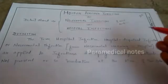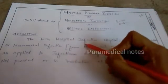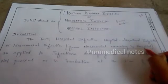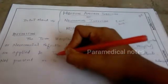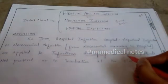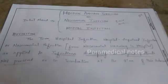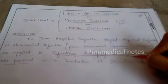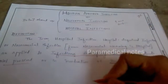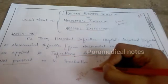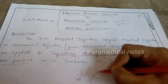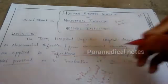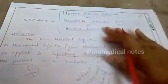So if they ask in an exam about nosocomial infection, we should write first the definition. In very simple words and a very simple sentence, we should write and underline the important points and words. The term hospital infection, hospital acute infection, or nosocomial infection means infection developing in hospital, not present or incubating at the time of patient admission.